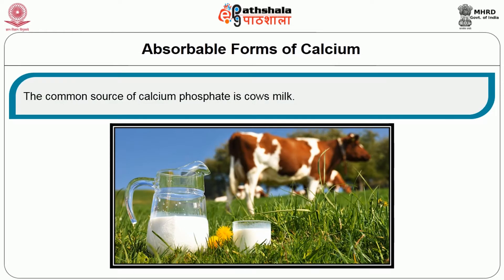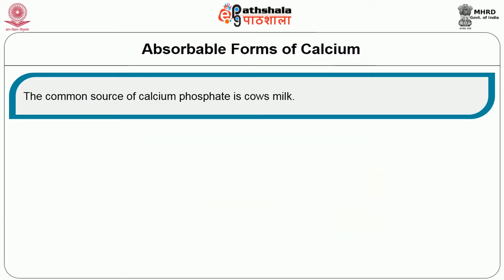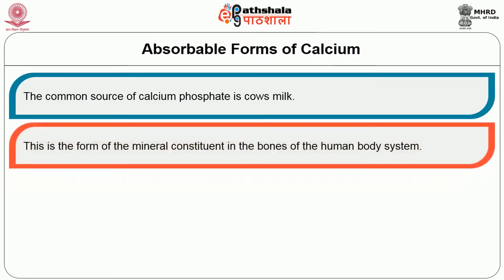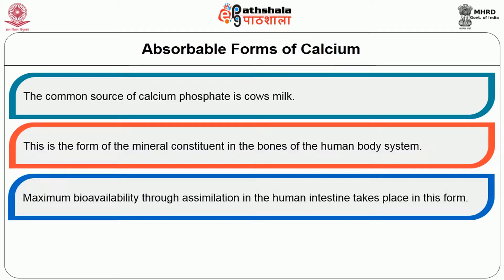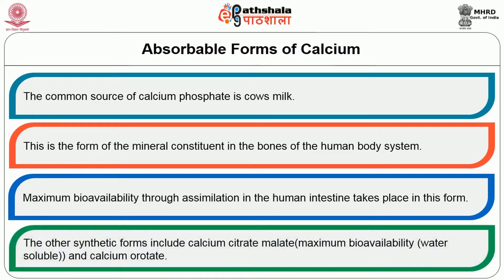The common source of calcium phosphate is cow's milk. This is the form of mineral constituent in the bones of the human body, and maximum bioavailability through assimilation in the human intestine takes place in this form. Other synthetic forms include calcium citrate malate, which has maximum bioavailability and is water soluble, and the next form is calcium orotate.